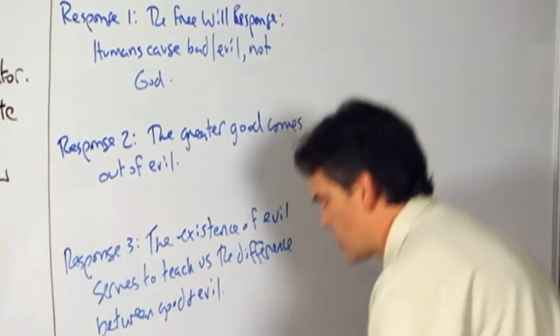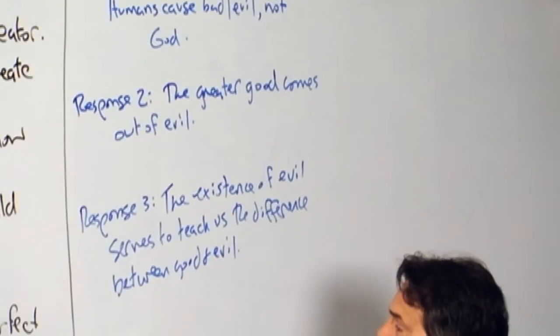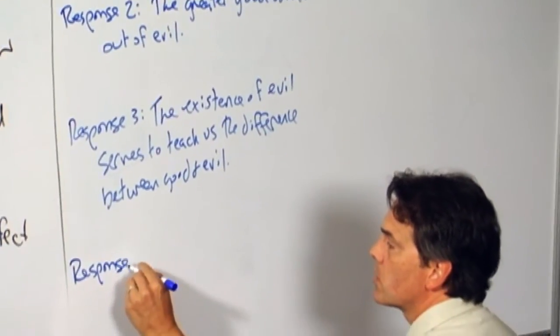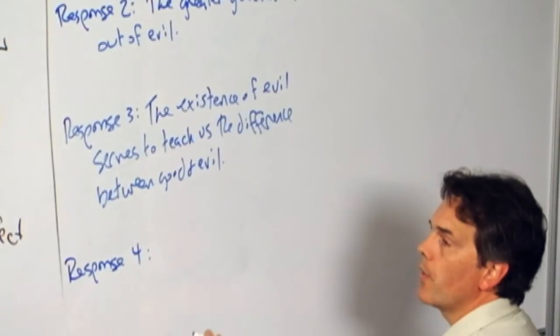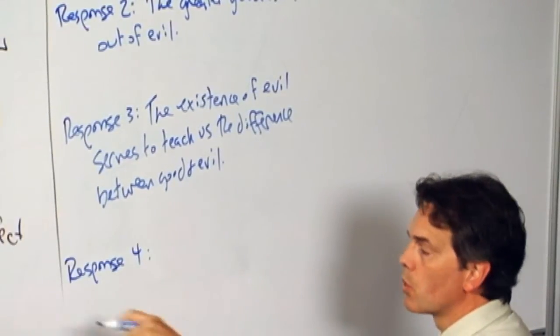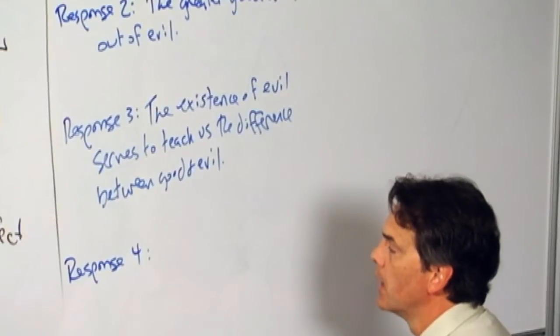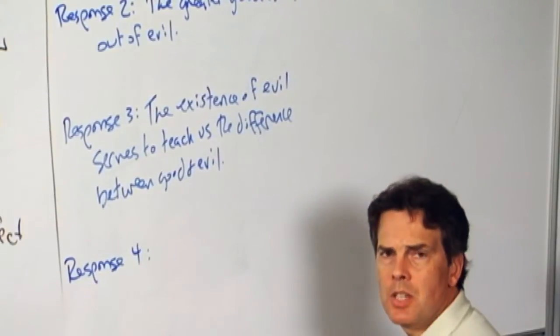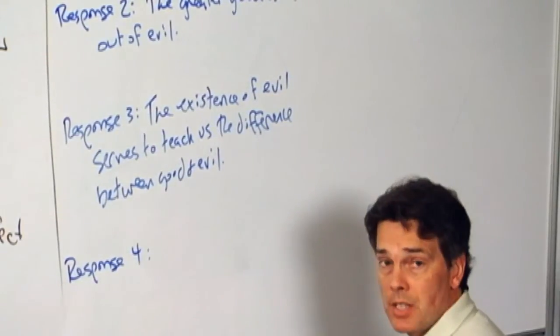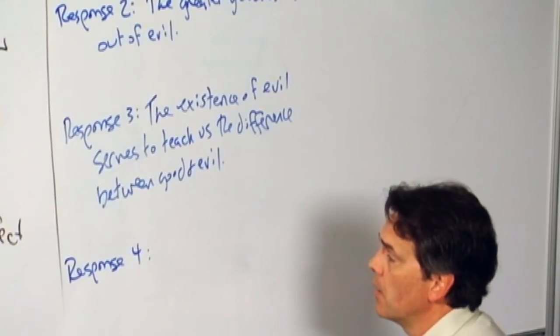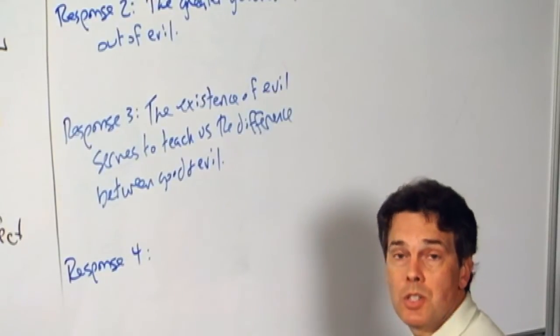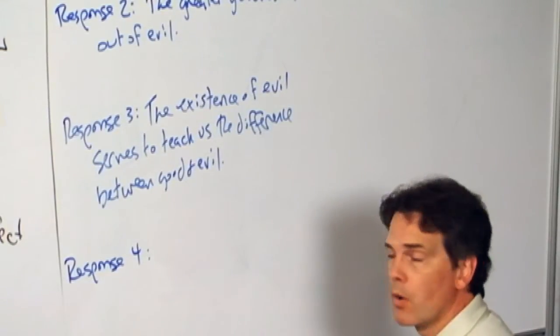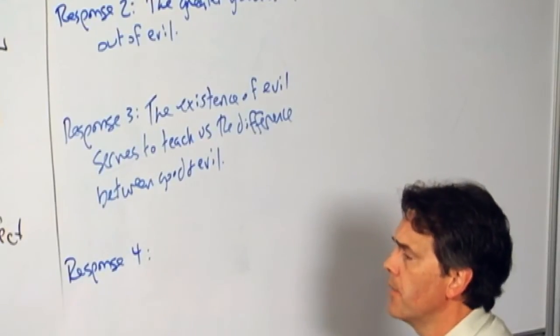A fourth kind of response is to point out from within the Western traditions the existence of heaven and hell and to argue that the existence of evil in this particular world, the lower physical world, is in the grand scheme of things not that significant, and that it's temporary, and that all evils that are suffered by innocent individuals are made up for and more than compensated for in heaven.